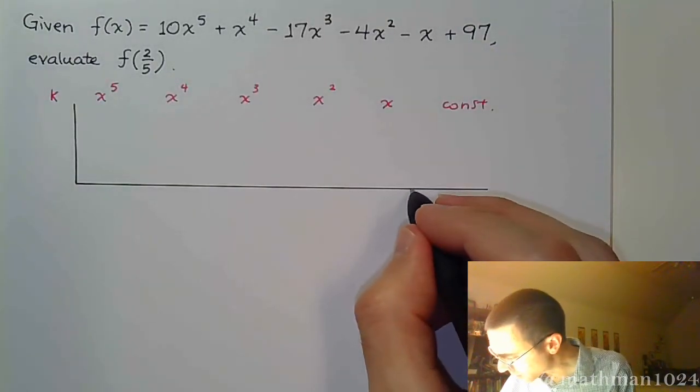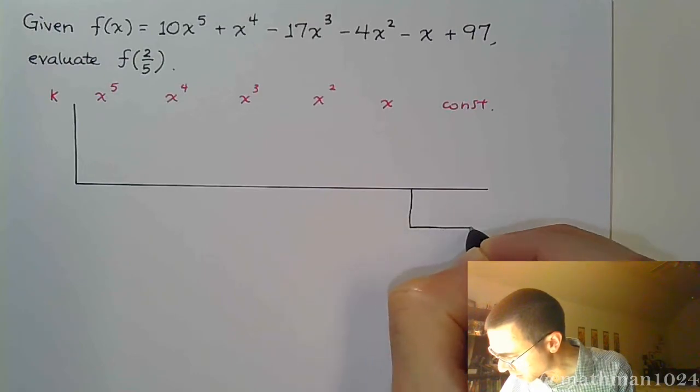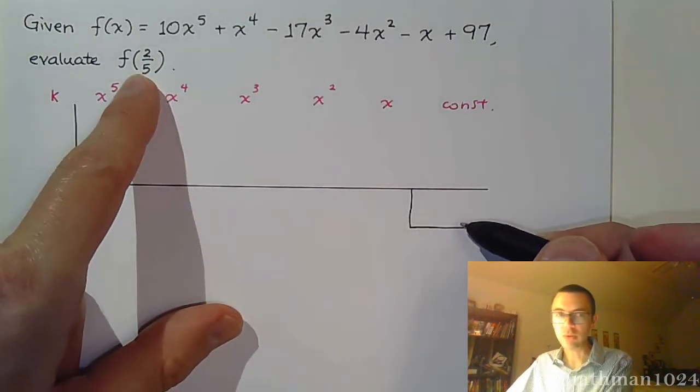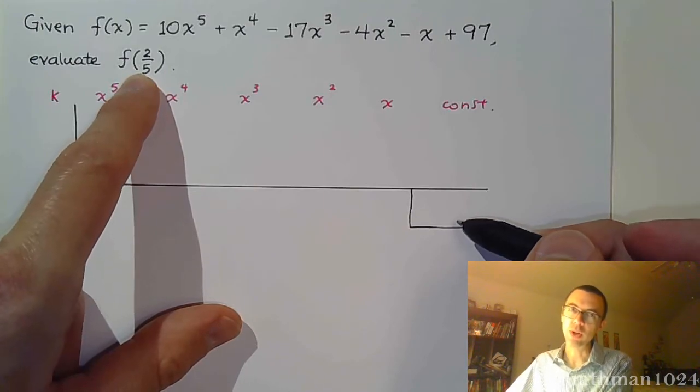Remember that what we're looking for is the number that shows up in the remainder box, because the remainder is going to be our function evaluated at 2 over 5.